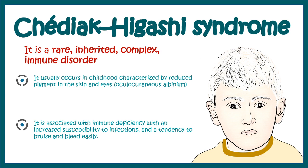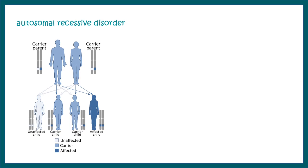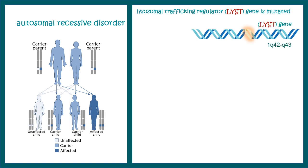There is also an increased tendency to acquire bruising or bleeding. This particular disease is an autosomal recessive disorder. The major molecule which is dysregulated is a gene known as LYST, or lysosomal trafficking regulator gene, which is mutated.